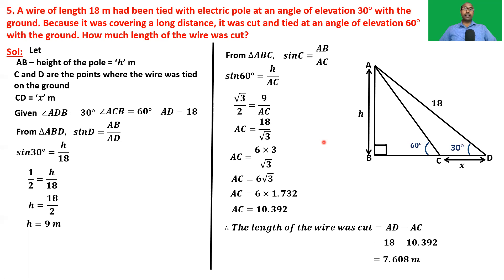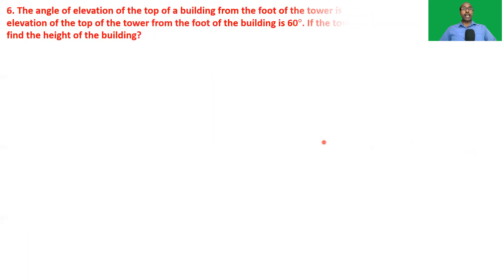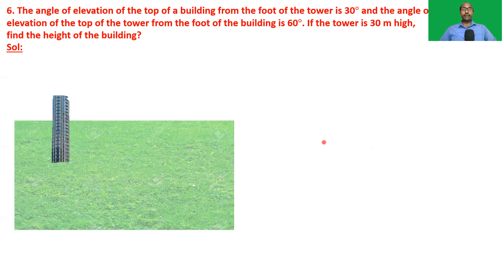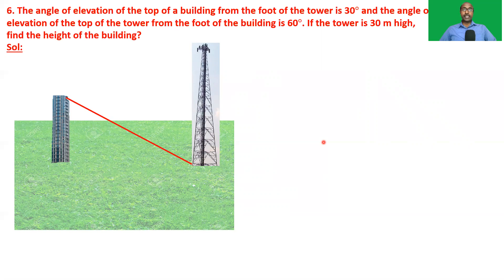The next problem is the sixth one: the angle of elevation of the top of a building from the foot of the tower is 30 degrees, and the angle of elevation of the top of the tower from the foot of the building is 60 degrees. If the tower is 30 meters high, find the height of the building.